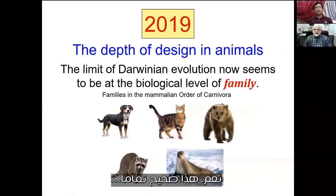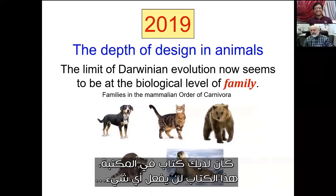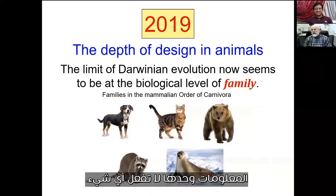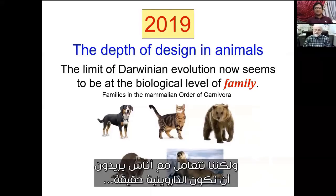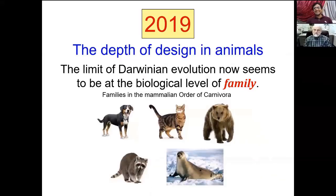Yeah, that's exactly right. It's like having a book in the library — the book's not going to do anything. And if it's a book on engineering, you have to go and read it and somebody has to put things together. The information itself doesn't do anything. But we are dealing with folks who want Darwinism to be true, so they're very resistant to arguments that, on their face, really are problems for them.